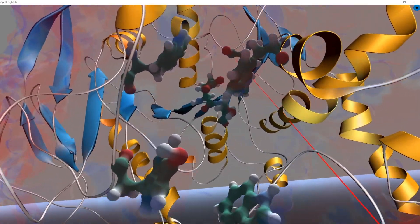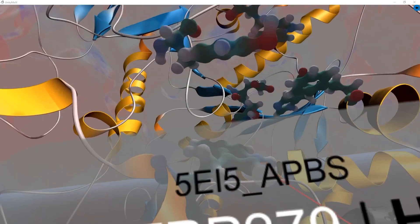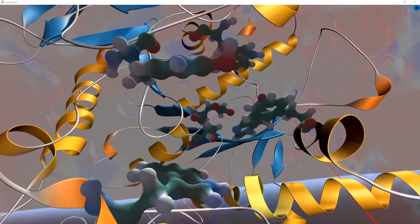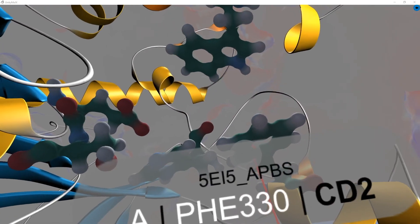At the mouth of the catalytic gorge, we have tryptophan-279 and tyrosine-70. As we traverse down the catalytic gorge, we find tryptophan-84 and phenylalanine-330.